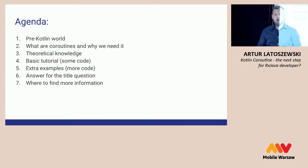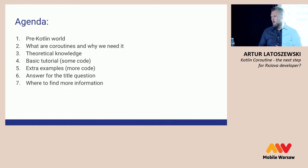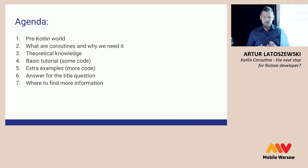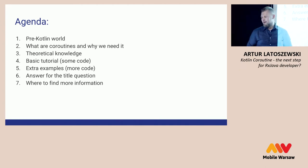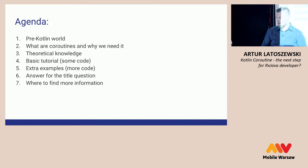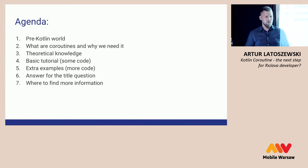Firstly, I will talk about the pre-Kotlin world, what we had before. Then I will say something about what Kotlin coroutines are and why we need them. Then some theoretical knowledge, and next will be a basic tutorial with some code, then extra examples with more code — I know everybody are developers and we love code. Next I will try to answer the title question, and in the end I will tell something about where you can find more information and what you should look at next.